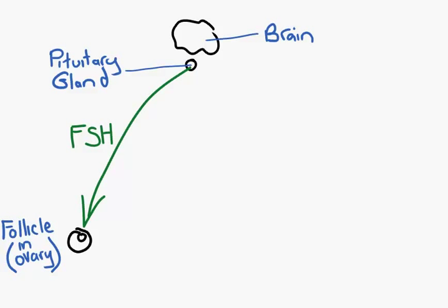Now, at some point, your follicle has got to say whoa, whoa, whoa, I've got enough stimulation. So it sends a message back to the brain. Now this message is a chemical called estrogen. This is negative feedback.